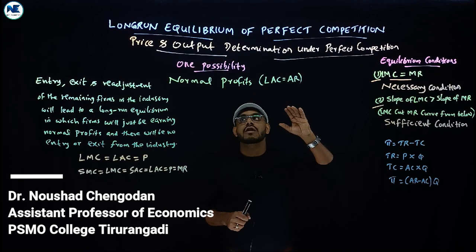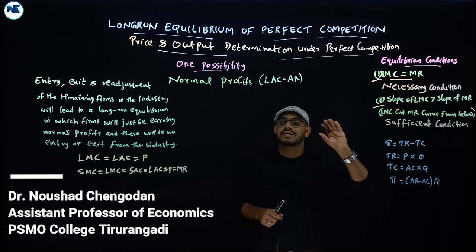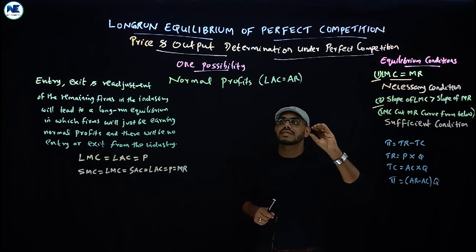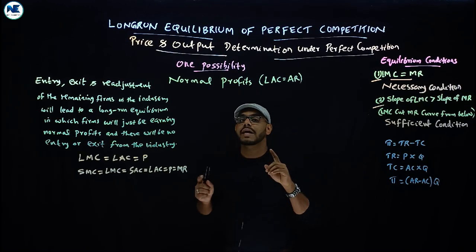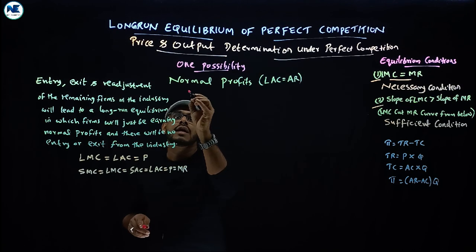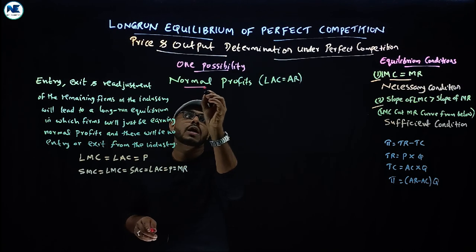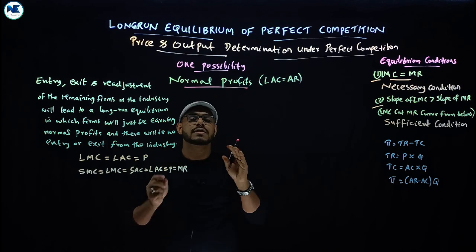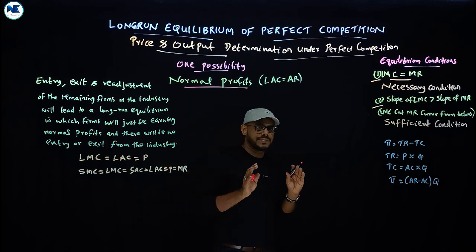Under the long run, we can see that the firm can earn only normal profit. This is the key point.